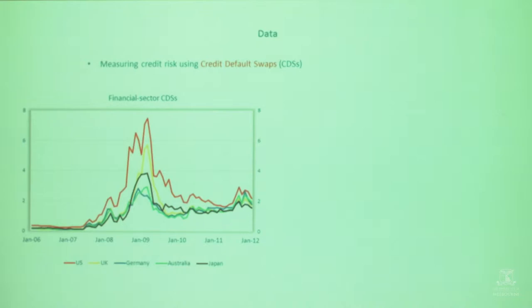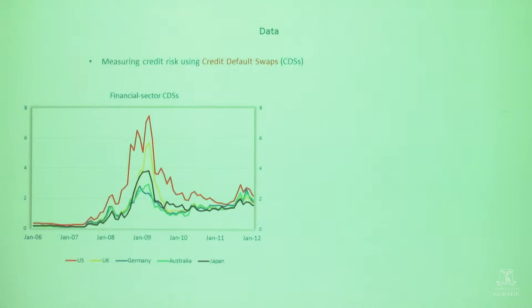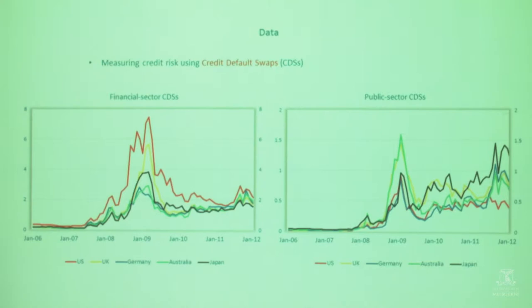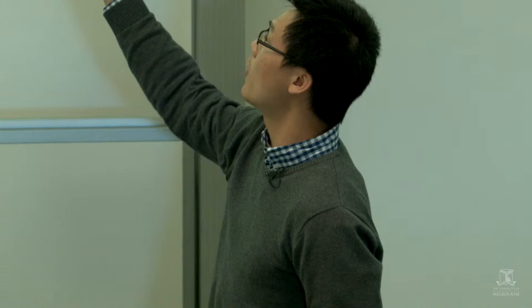Here is the CDS data for the financial sector of the five major economies mentioned at the beginning. Before the crisis, they were very safe — the premium was very low. Once the financial crisis happened, the premiums jumped up, indicating that financial sectors became very risky and spread from one to another. This is just the CDS for the financial sector. For the public sector — the government — because governments bailed out their financial sectors, they also became riskier. You can see the CDS premium for these governments jumped substantially during the GFC and remained high up until 2012.